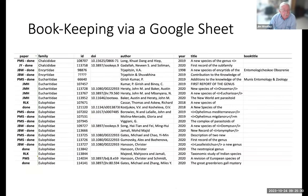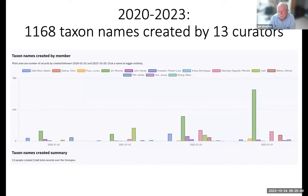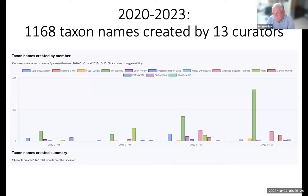We keep track of all papers that need to be curated in a Google Sheet that everyone has access to, so we can stay organized about who's doing what and what papers still need to be done. A screenshot from the project activities task in TaxonWorks shows 1,168 taxon names were created by 13 people since 2020. You can see that a lot of people have been participating — and you can see who the big contributor is.